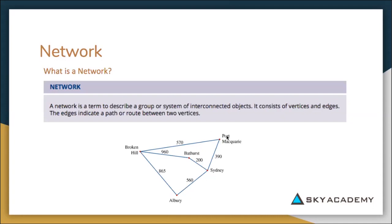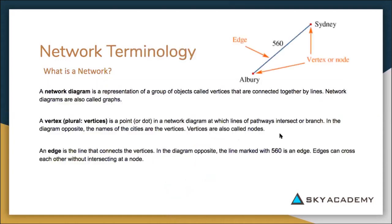So here, this node is known as Port Macquarie, and the edge connecting it to the node Broken Hill is this one here with a value of 570. So again, as we can see in this diagram here, the edge is the line connecting the two vertices or the two nodes.